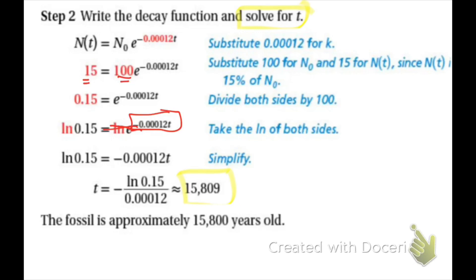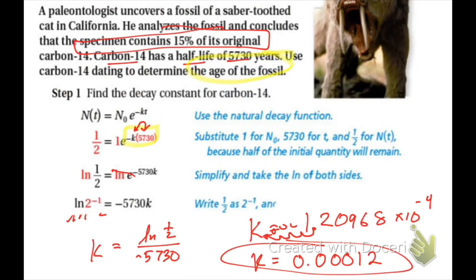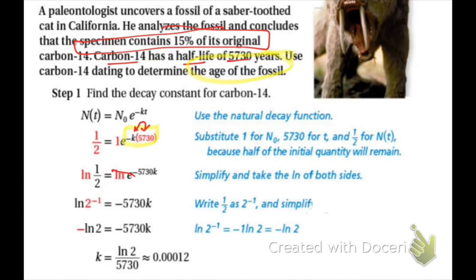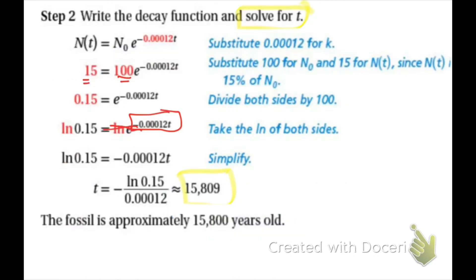So using carbon-14 and the method of half-life, the approximate age of the fossil would be 15,800 years. That's the math behind it. The book does it slightly differently — they move the 2 up as 2 to the negative 1 — but I'm just trying to eliminate as many steps as possible. Let me know if you have any questions. Remember, you guys have a quiz on Thursday on section 4-5 — group 1 starting at 10am, group B at noon. See ya.